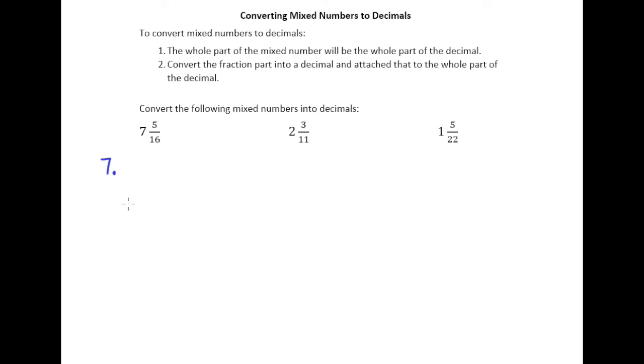So we'll be taking 5 divided by 16, and 16 doesn't go into 5, right? So we'll put our decimal point there, put a 0 there. 16 goes into 50, well 16 times 3 is 48, so I'm going to go ahead and put a 3 above the 0. We have 48, get a remainder of 2, add another 0, drop it down. 16 goes into 20 one time.